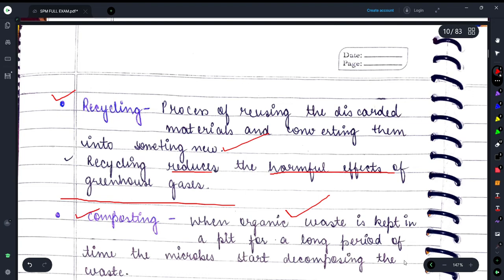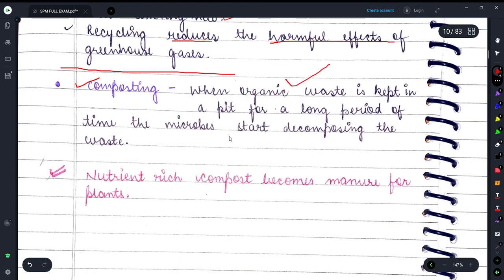Now let's move on to the last method and that is composting. When there is organic waste, organic waste are things that can be disposed of by microbes.